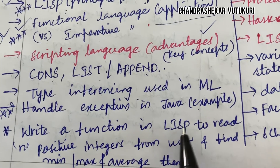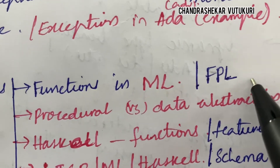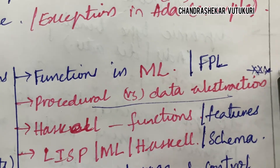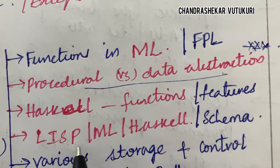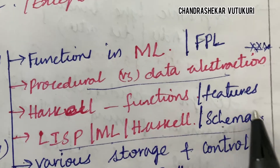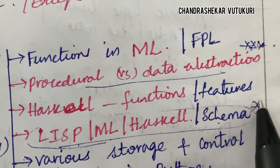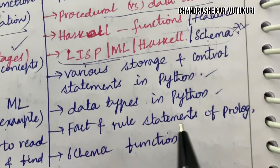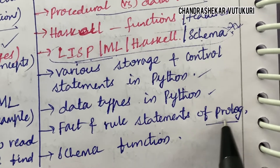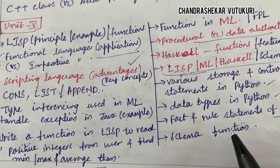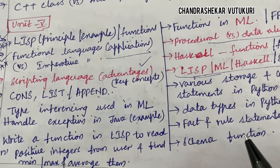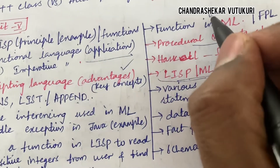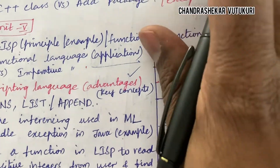Functions in ML or FPL, procedure versus data abstraction is a sure question. Haskell functions and features, and the differences between Lisp, ML, Haskell, and Scheme are short questions. Various storage and control statements in Python, data types in Python, and fact and rule statements of Prolog and Scheme functions are all topmost and sure questions for Unit 5. Please concentrate on Unit 5 first, dear students, before studying Unit 4.